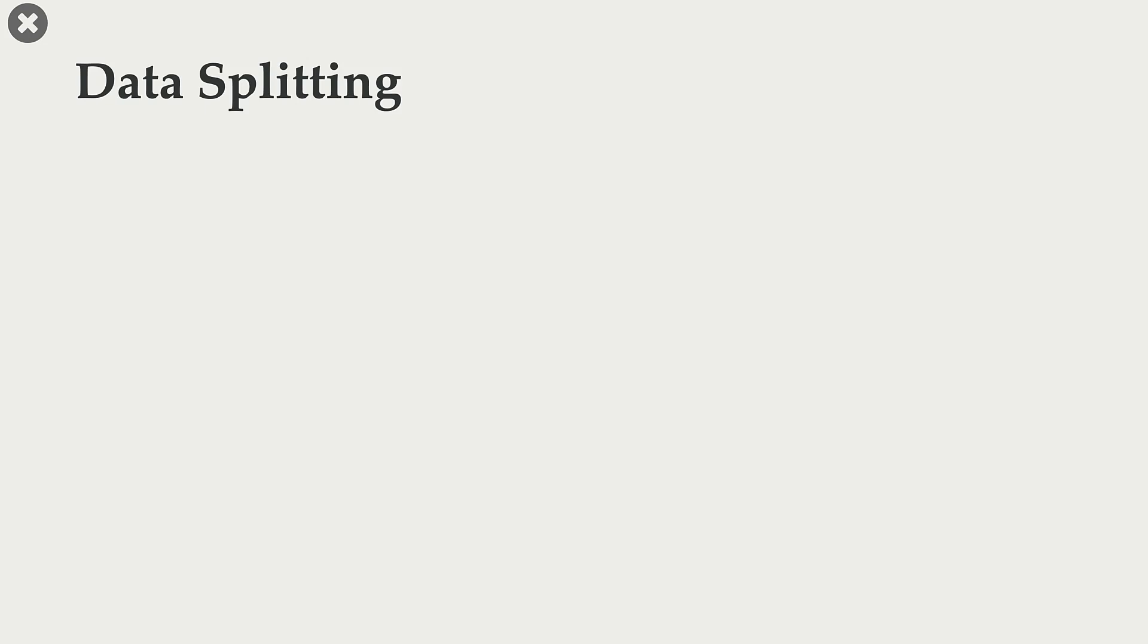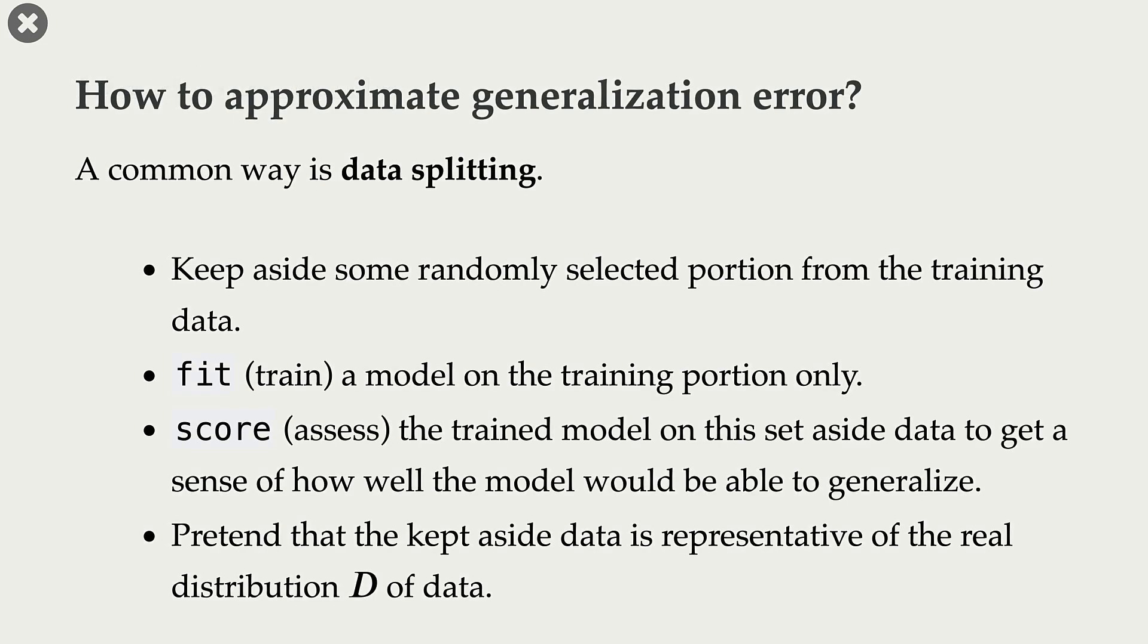In this video, we are going to talk about data splitting, which is a common way to approximate generalization error. How do we do it? We are given this training data. We keep aside some randomly selected portion from the training data. We fit or train our model only on this training portion.